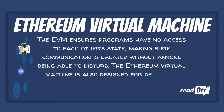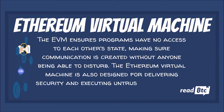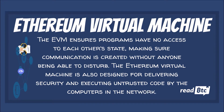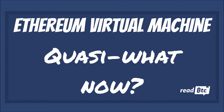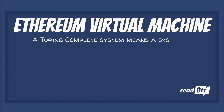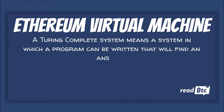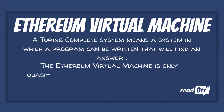The Ethereum Virtual Machine is also designed for delivering security and executing untrusted code by the computers in the network. We can think of the EVM as a quasi-Turing complete machine. A Turing complete system means a system in which a program can be written that will find an answer, although with no guarantees regarding runtime or memory.